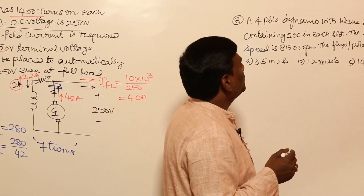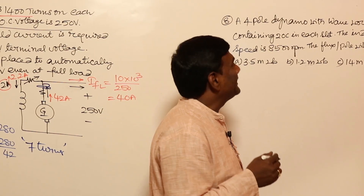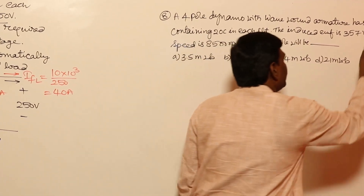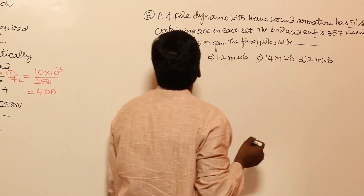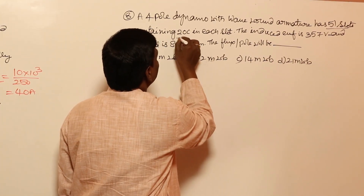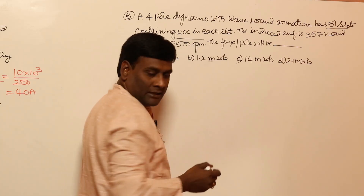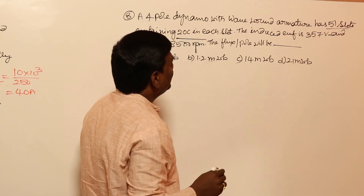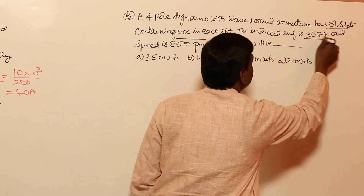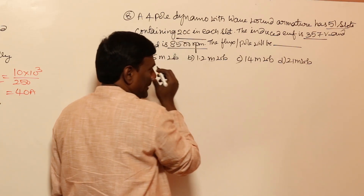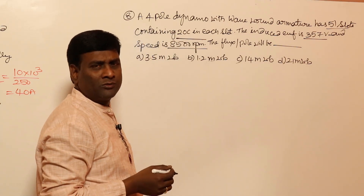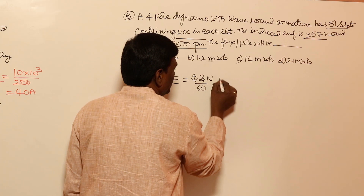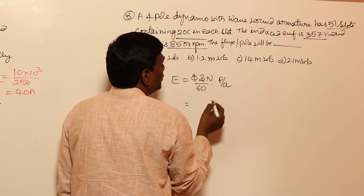Next problem (PYQ): A four-pole dynamo (generator) with a wave-wound armature has 51 slots containing 20 conductors in each slot. The induced EMF is 357 volts and speed is 8500 RPM. Find the flux per pole.